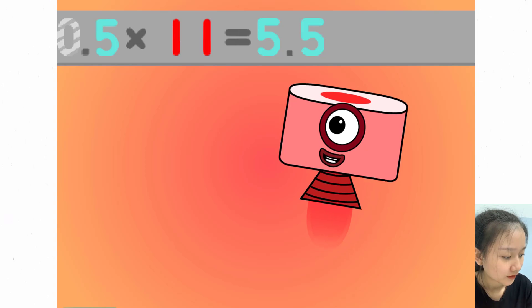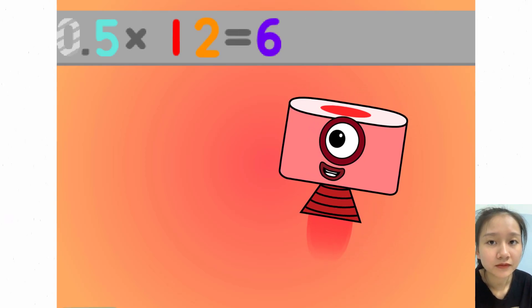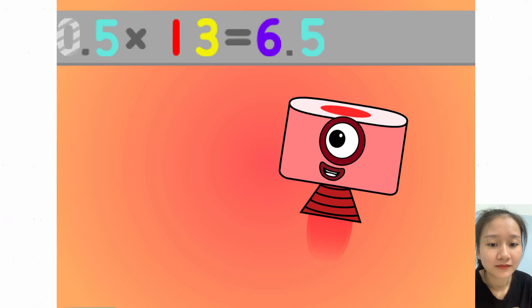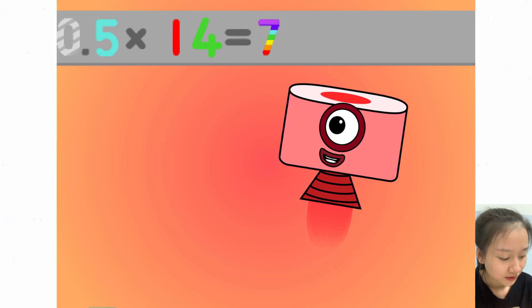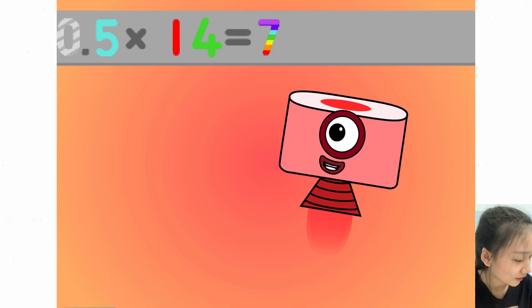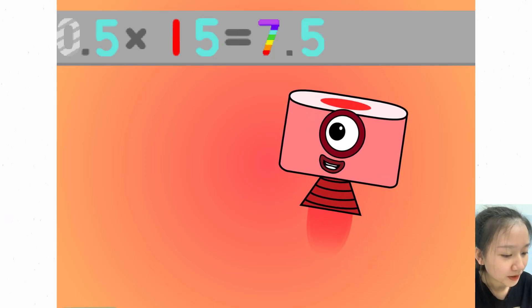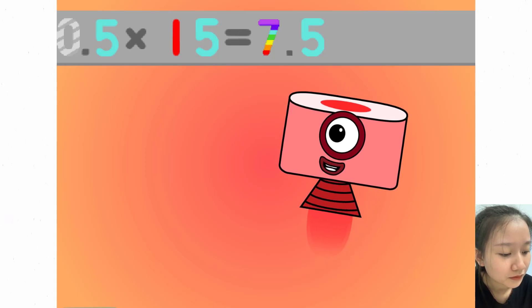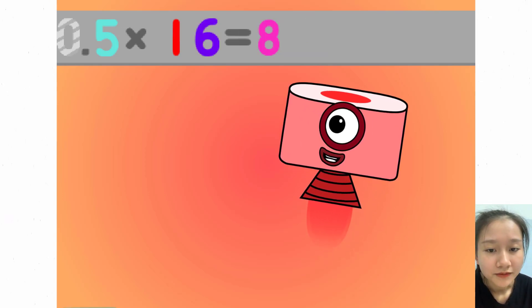0.5 times 12 equals 6. 0.5 times 13 equals 6.5. 0.5 times 14 equals 7. 0.5 times 15 equals 7.5. 0.5 times 16 equals 8.